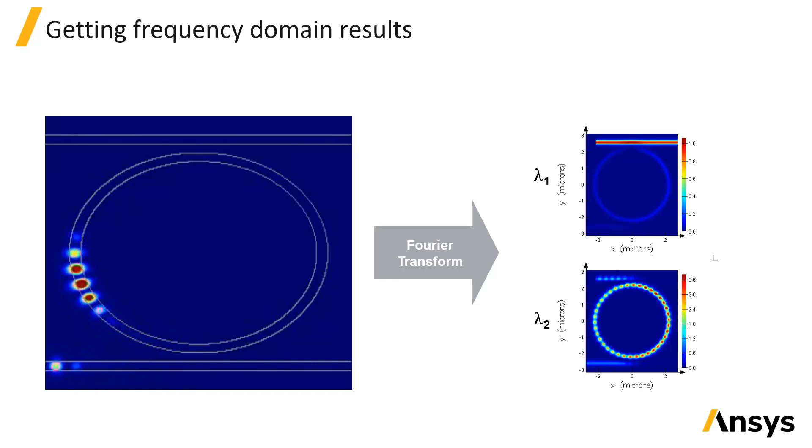While the simulation is running, we use frequency domain monitors to perform a Fourier transform at different wavelengths. By doing this, we can extract the CW fields at different wavelengths and see, for example, the fields where the ring is out of resonance and the majority of light is transmitted, and the fields where the ring is in resonance and most of the light is dropped. Both of these results are obtained from a single time domain FDTD simulation using a short excitation pulse.